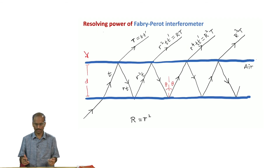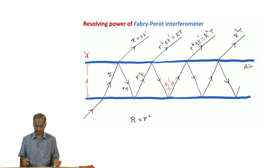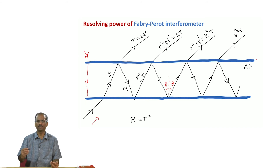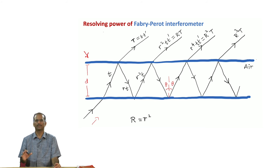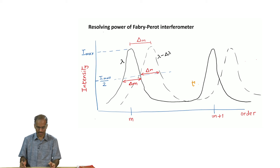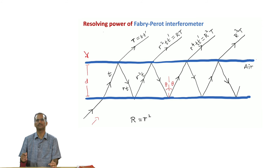Next we will go to the problem of calculating the resolving power of a Fabry-Perot interferometer, which we left incomplete in a previous class. The Fabry-Perot interferometer consists of an etalon where light comes from one direction, undergoes multiple reflections, and also partially transmits on the other side. We saw in particular that it has very high sensitivity - when you plot intensity as a function of interference order, the peaks are very sharp for cases when the reflection coefficient R is sufficiently large.